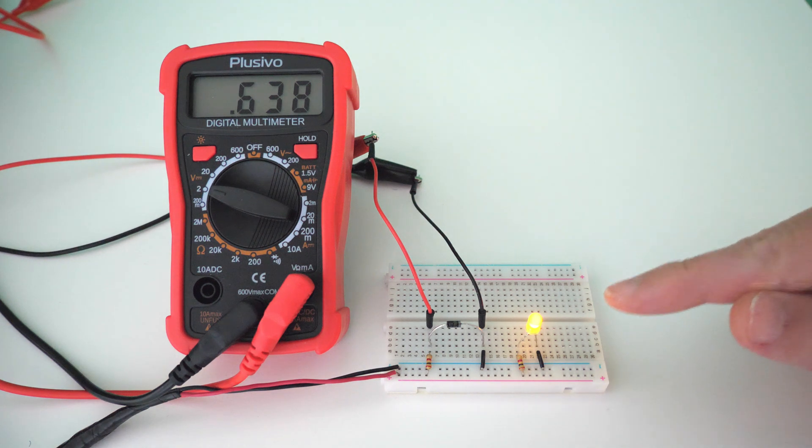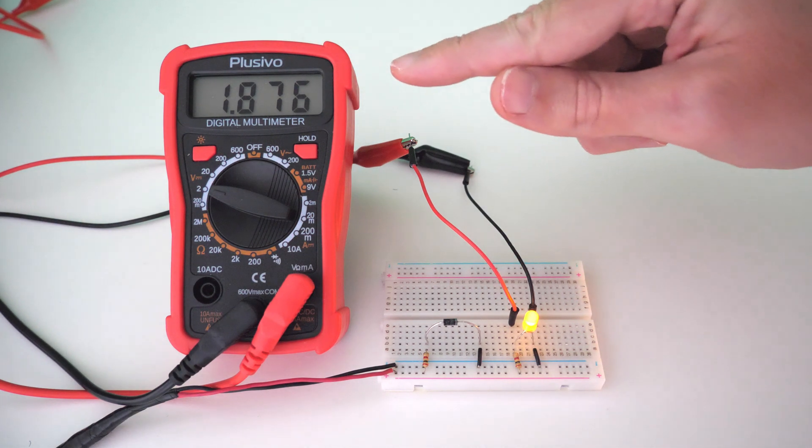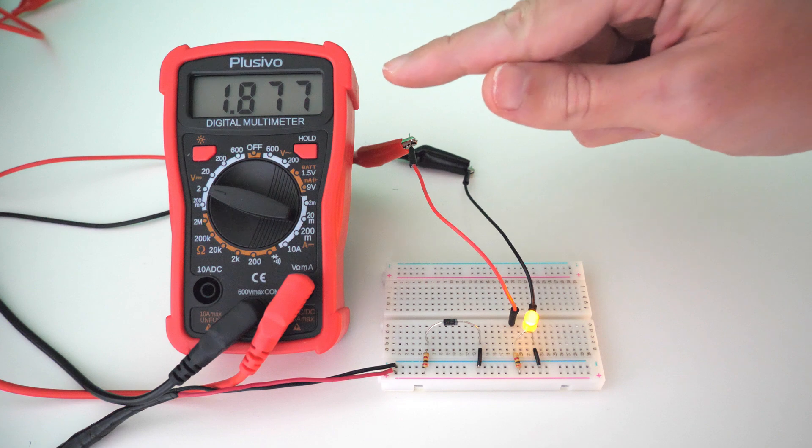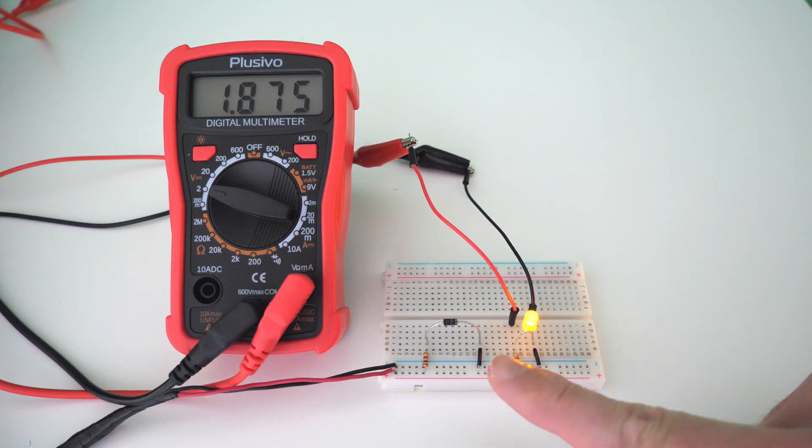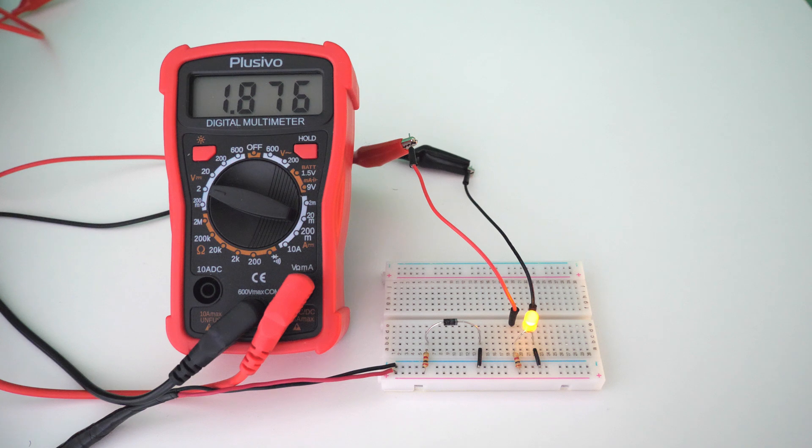Now the question is, what is the voltage drop going to be across this yellow LED? The voltage drop across this yellow LED is 1.876 volts. So a lot of times people think that because the voltage drop across the diode is 0.6 or 0.7 volts, that the voltage drop across an LED is also going to be 0.6 or 0.7 volts. But that is definitely not the case.